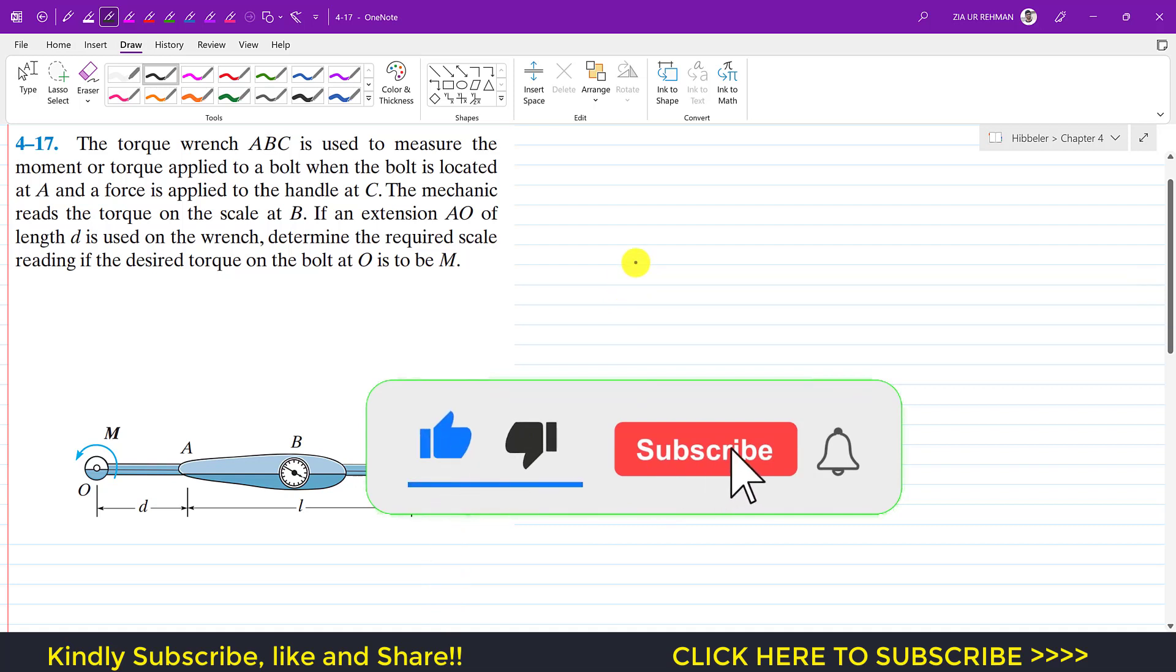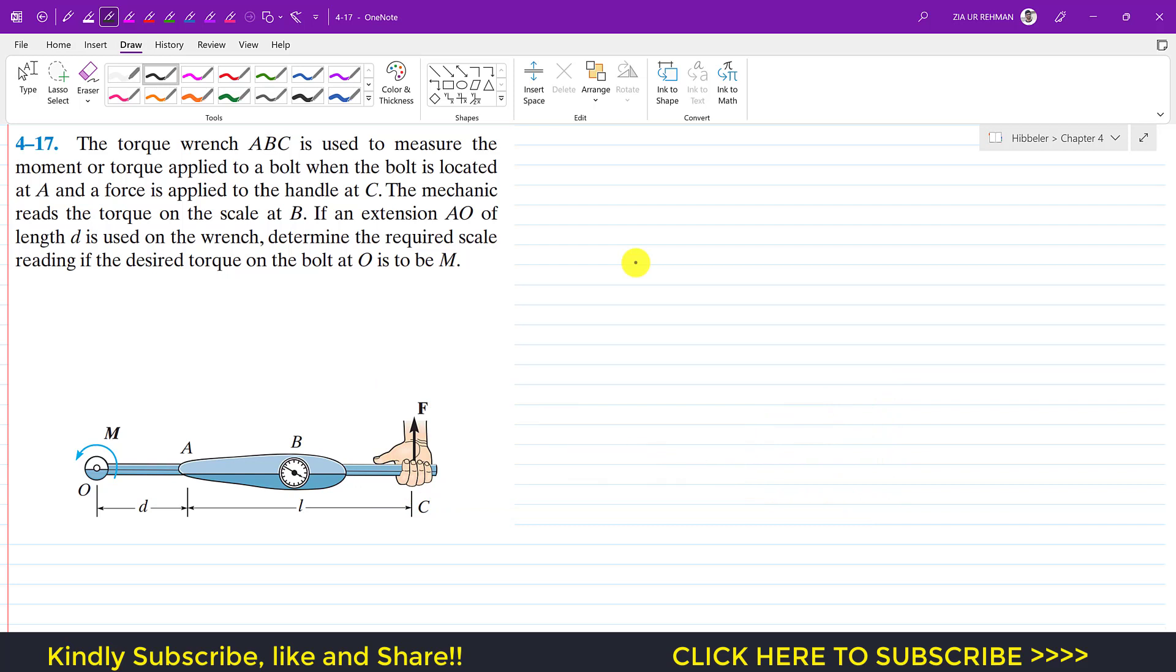Now we are going to solve problem 417. The problem says that torque wrench ABC is used to measure the moment or torque applied to a bolt when the bolt is located at A and a force is applied to the handle at C. The mechanic reads the torque on the scale at B. If an extension AO of length D is used on the wrench, determine the required scale reading if the desired torque on the bolt at O is to be M.